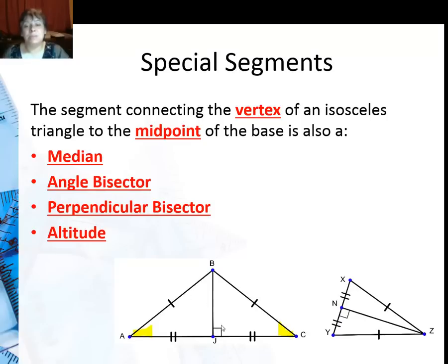Then since it's perpendicular here, that means it's an altitude because it's going through the vertex. So when we do this special segment through the vertex angle, it is all four of the special segments.